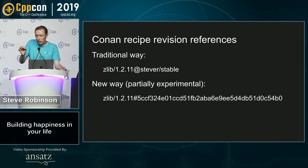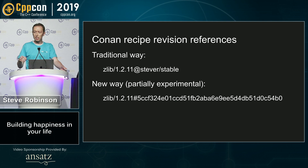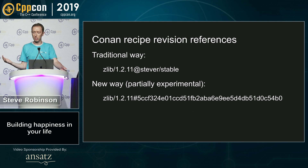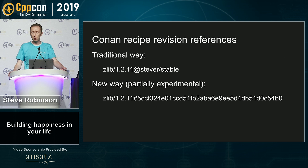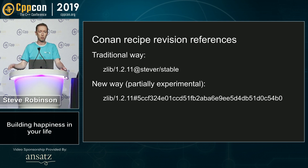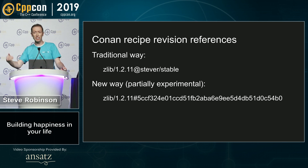A quick note on my favorite new feature: you may have seen the traditional way where you have a username and then stable or testing for the channel. You can now use just a git hash — it's still an experimental feature, but it's really nice integration into your Conan recipe repository to just say I'm on this version and this hash of your recipe.